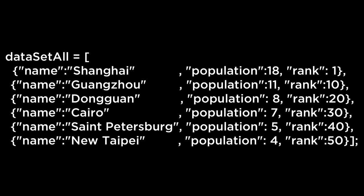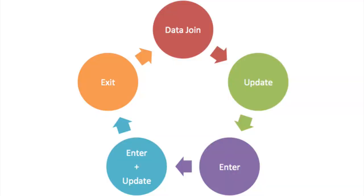Dynamic data. Thus far we have been looking at and using static data. The data set on the screen is an array of JSON objects where each object represents a city and its respective attributes. This is useful if you are feeding in data from the server once or if you are using static data. As we saw in the last two videos, we can use the D3 general update pattern to update data bound to DOM elements — either by index as the default, or by using a key function.